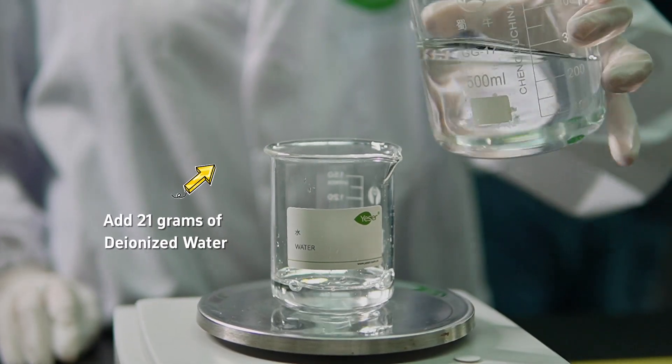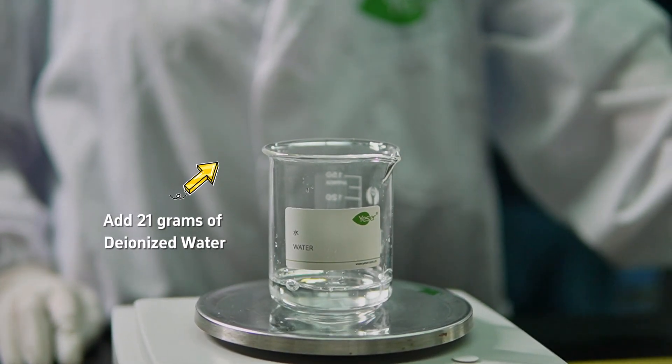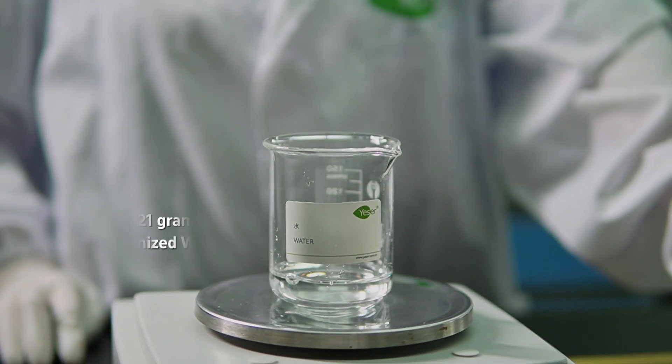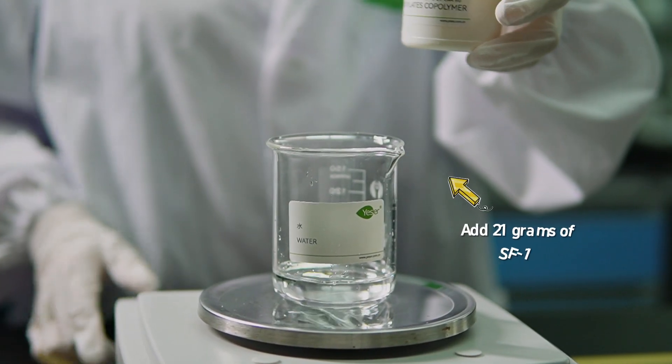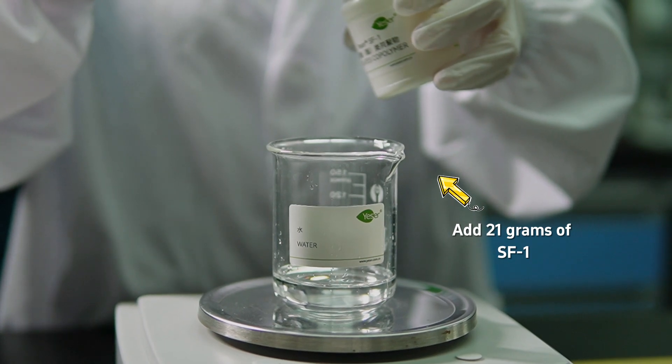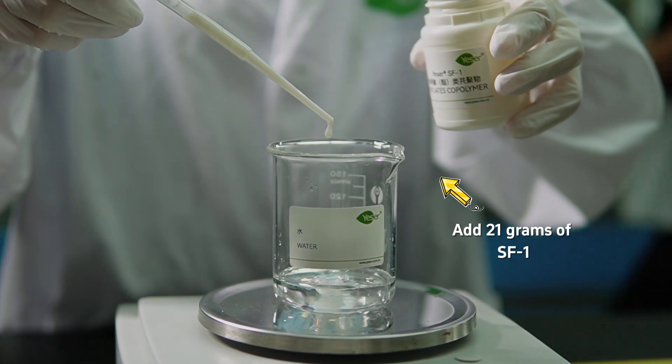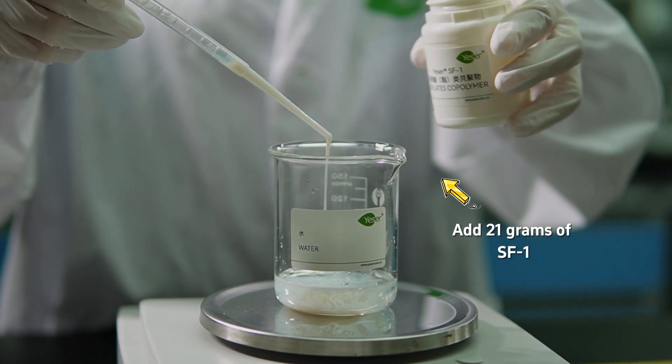Before incorporating it into our formula, we must pre-dissolve it using a 1 to 1 ratio with 21 grams of deionized water. This step ensures that the SF1 is evenly distributed, maximizing its suspending power and the perfect consistency of our final formula.